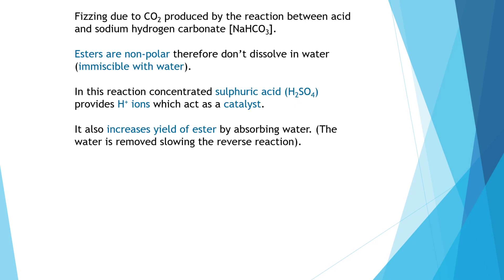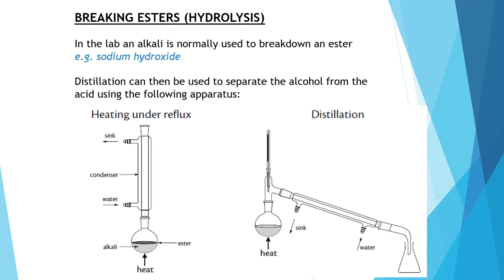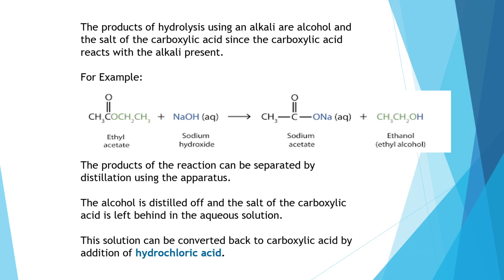Forming esters is a reversible reaction. We can also hydrolyse the ester by heating under reflux and then distilling, which gets you back to your original alcohol and acid. If you use an alkaline catalyst to hydrolyse your ester, you can form a substance known as a soap — but we will cover this later in unit 2.